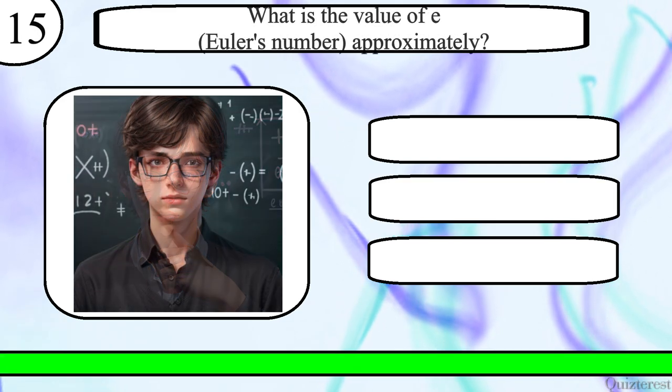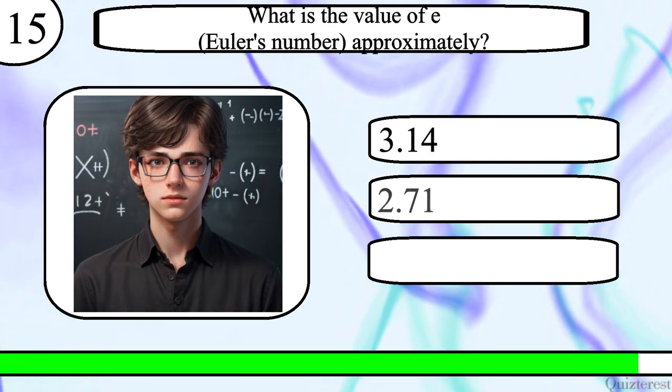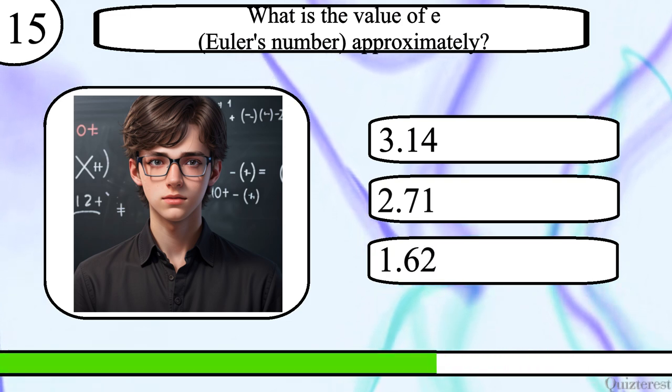Question 15. What is the value of Euler's number approximately? 3.14, 2.71, or 1.62? The correct answer is 2.71.